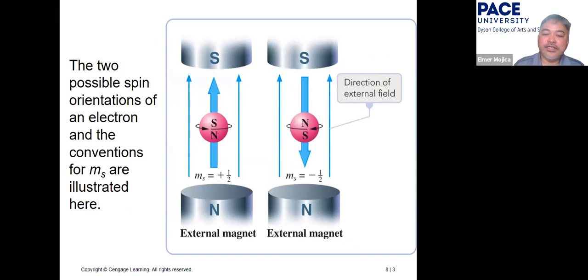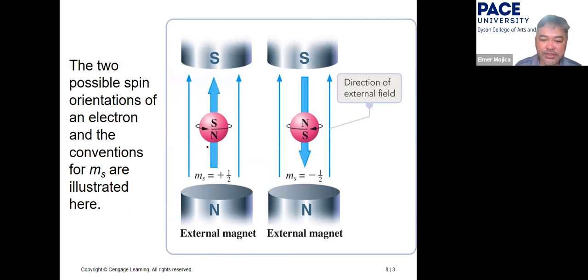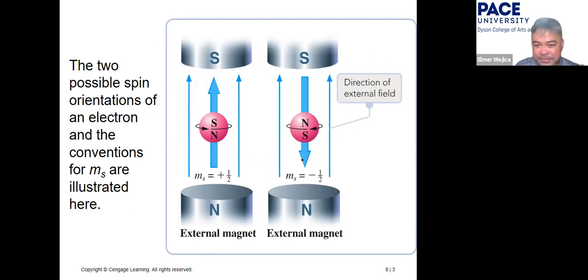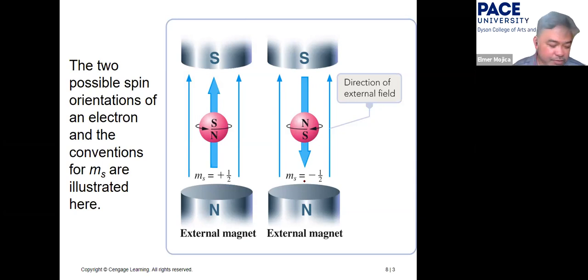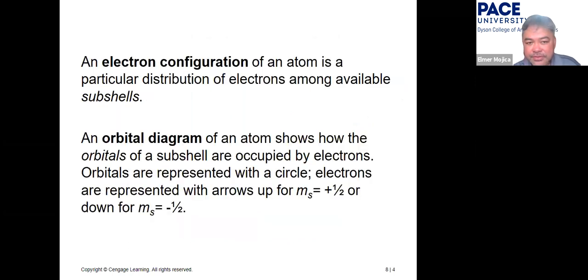The positive one-half and negative one-half are differentiated by spin direction: one is counterclockwise and the other is clockwise. This tells us that in every orbital you can accommodate at most two electrons.